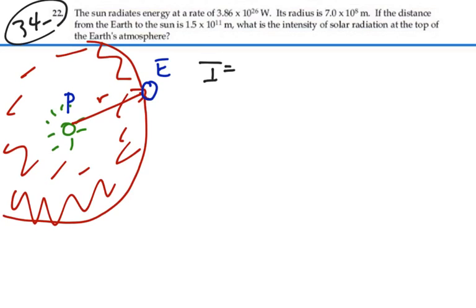Intensity is equal to the power per area. In this case, all the power of the sun is being distributed over the area of a sphere of radius r. So that is going to be power over the area of that sphere, 4 pi r squared.